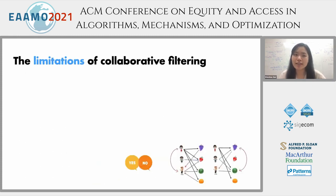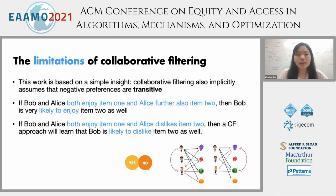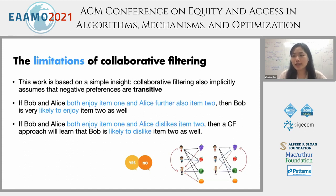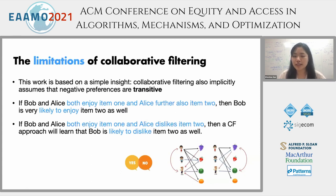Our idea here is based on a simple intuition about the limitations of the collaborative filtering principle. Collaborative filtering also implicitly assumes that negative preferences are transitive. If I have two users who are similar and they both enjoy item one, and one of the users, Alice, also enjoys item two, then the system will predict that Bob is likely to enjoy item two as well. But on the other side, if Alice dislikes item two, the algorithm might learn that Bob is also unlikely to enjoy item two. Based on this transitive preference prediction, the algorithm might limit some users' access to diverse preferences if those preferences differ from the majority of users.